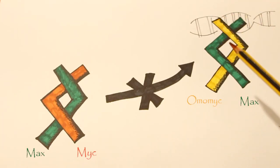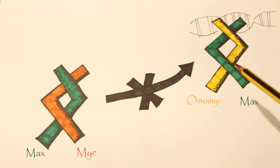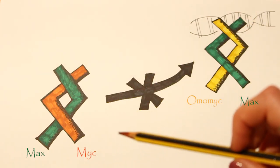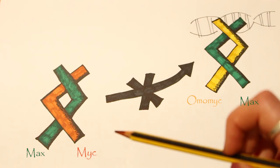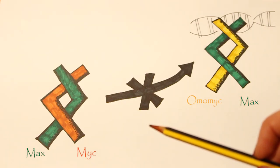The other explanation is that when omamic binds max, this partnership can bind your DNA, blocking myc and max from binding your DNA, and therefore stopping your cells from growing and dividing too quickly.